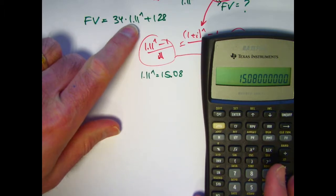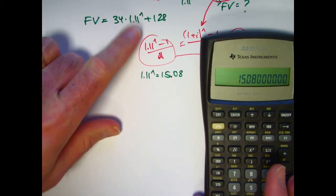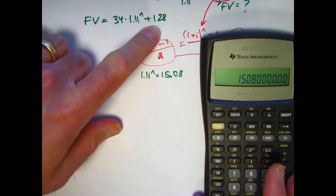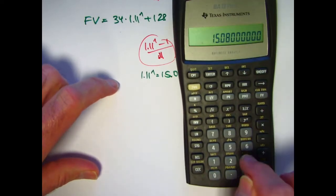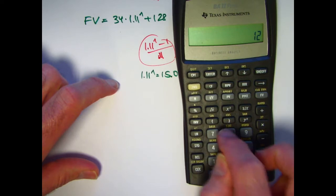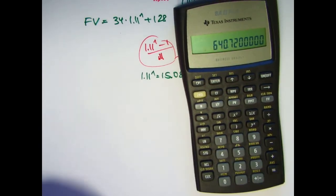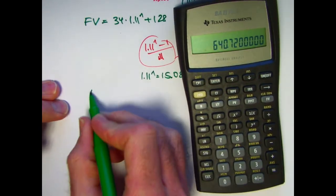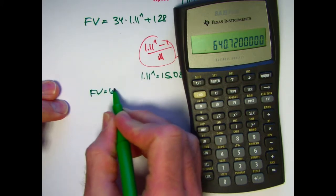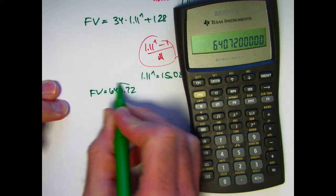But to finish the problem, all I need to do is plug this 15.08 in here. I need to multiply it by 34 and add 128. Times 34, add 128. The answer for the future value is 640.72. And that is the correct answer.